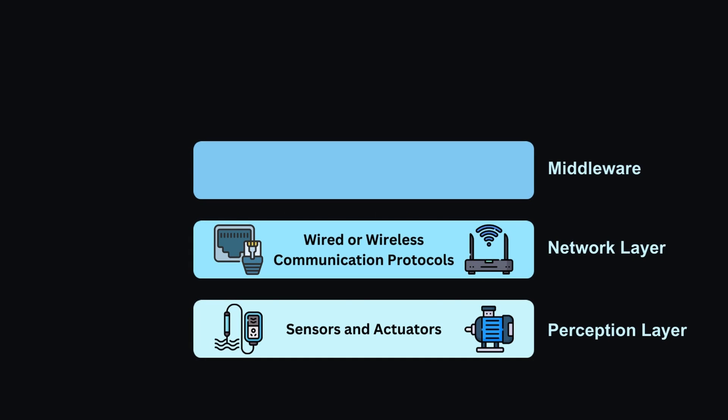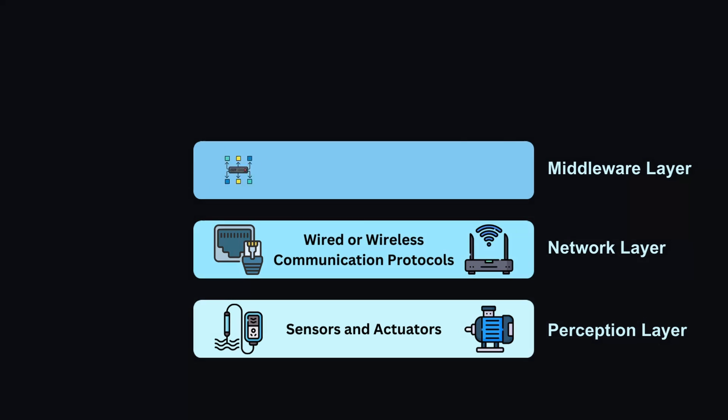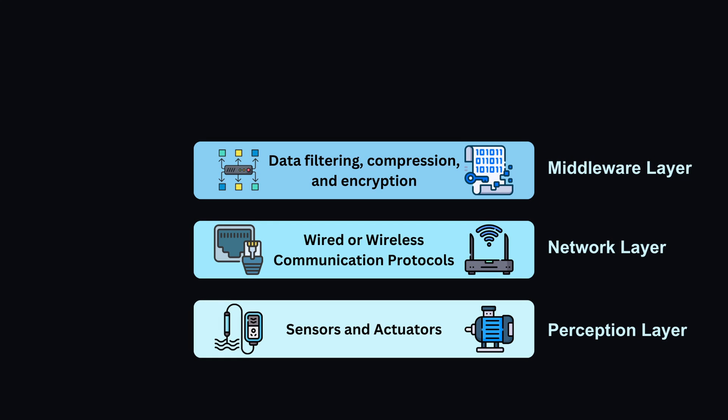Middleware layer: this layer sits between the network layer and the application layer, providing services to enable message brokers, protocol converters, and data management platforms. Message brokers are used for communication between devices and applications using publish-subscribe messaging patterns — MQTT is the most popular method known for this. Protocol converters translate data between different communication protocols, while data management platforms handle tasks such as data encryption, storage, retrieval, and processing.